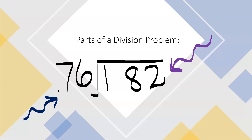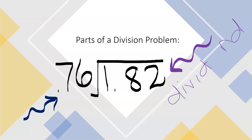In order to understand what you're looking at, here is a division problem with decimals. Look at the purple arrow — what part of the division problem is this known as? You guessed it — that is the dividend. The dividend is what is being split, so in class we call this the whole. Now look at the blue arrow. The blue arrow is called the divisor.